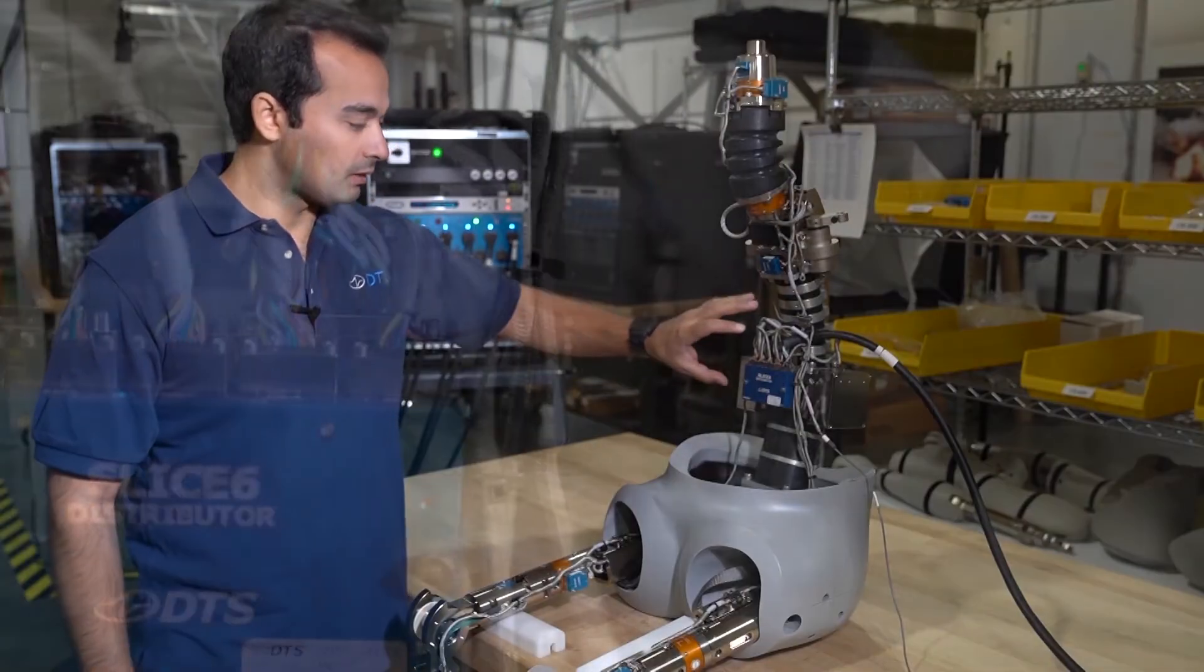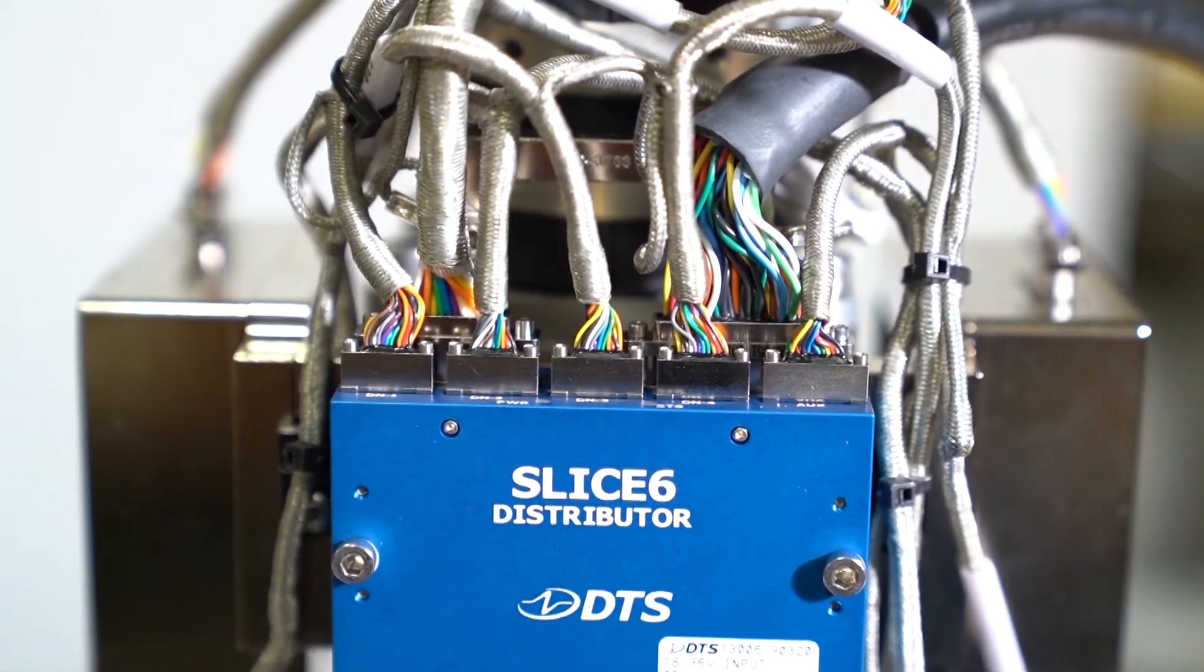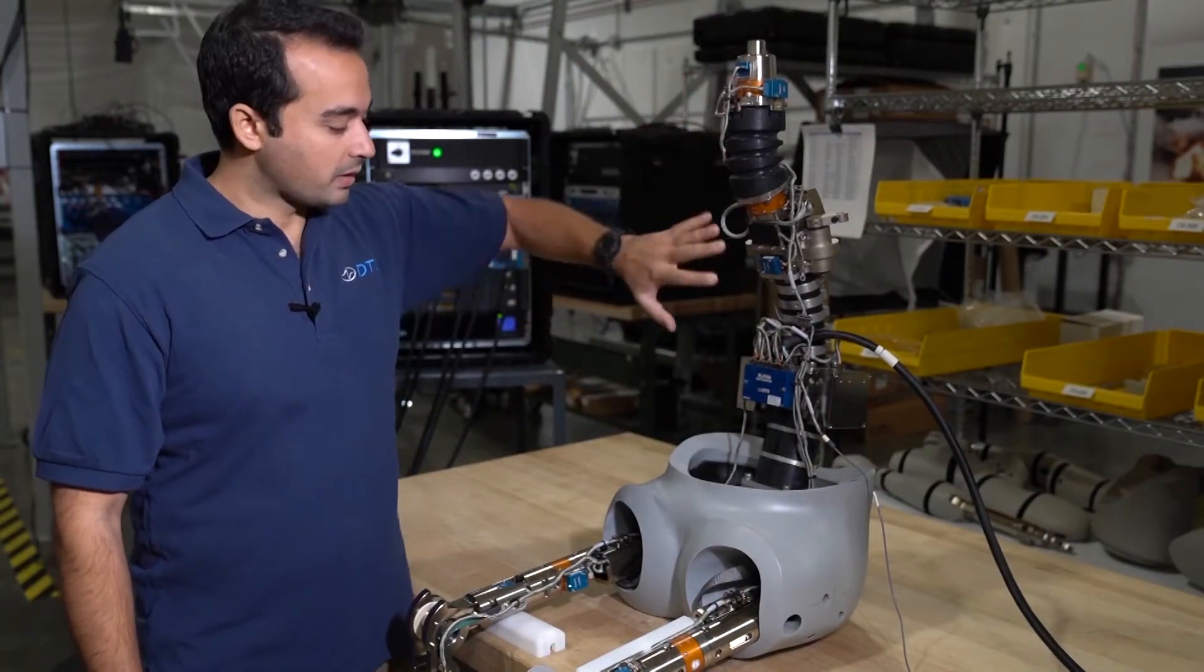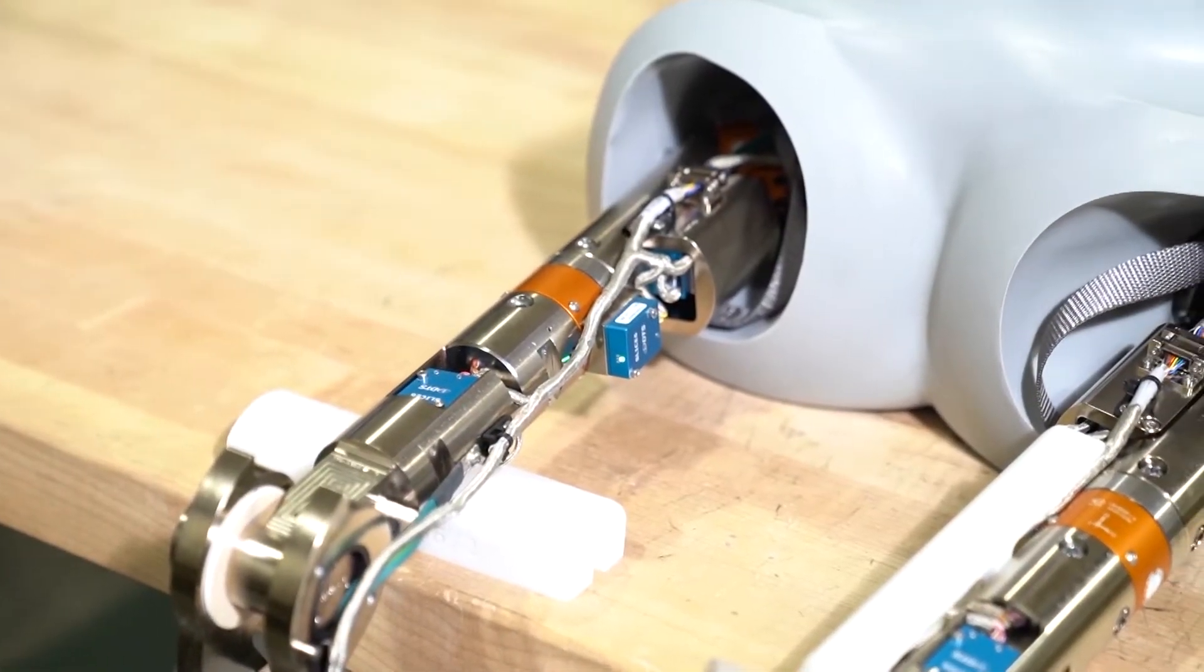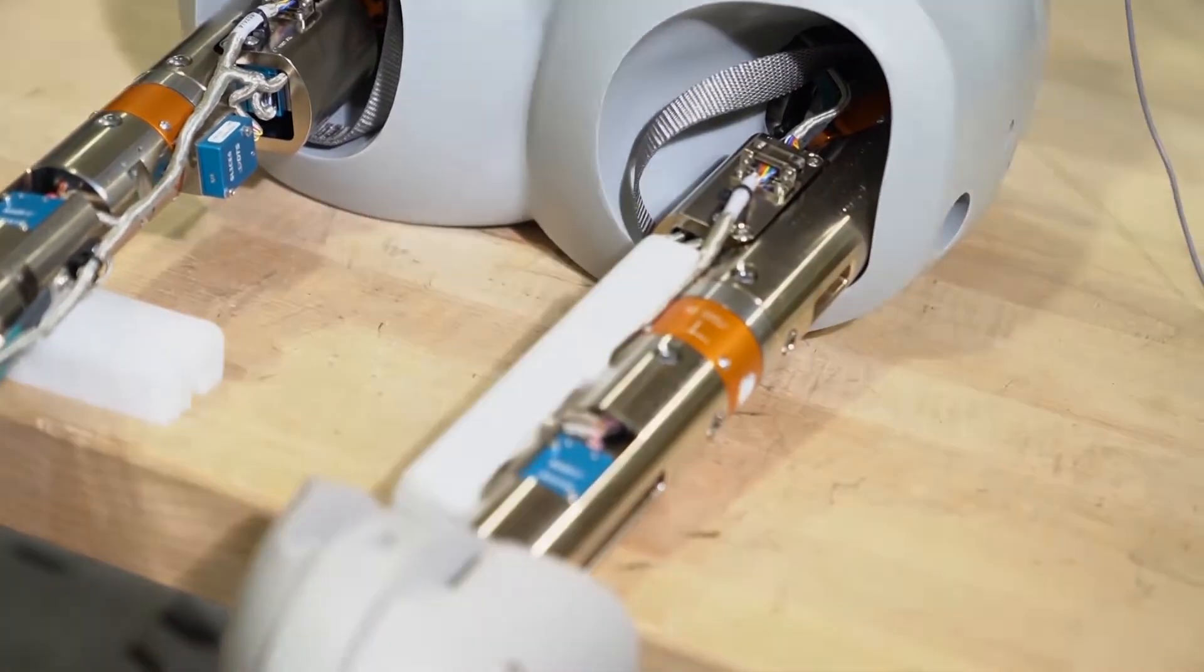You have your Slice 6 distributor in the center, which is then connected with cable harnesses to each chain of the ATD. So on We-A-Man, we have a chain that goes up to the head, we have a chain that goes down to the pelvis, and then one chain down each leg. And that's very similar to other automotive ATDs like the Thor, the World SID, or the Hybrid 3.